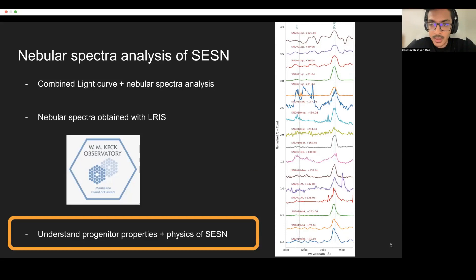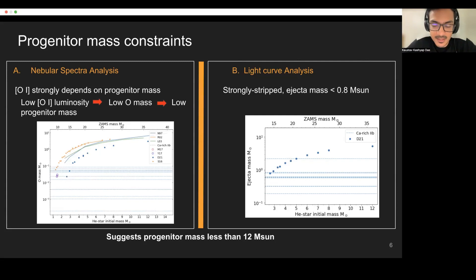We use the nebular spectra to measure the calcium-2 and oxygen-1 forbidden lines flux. The calcium-2 to oxygen-1 flux provides a very strong constraint on the progenitor mass. The reason for this being the oxygen production usually happens at the core of the star while the calcium production happens at the explosion ejecta. Low oxygen-1 luminosity implies that there's low oxygen mass, which in turn implies that the progenitor mass is less.